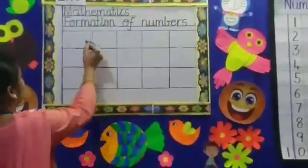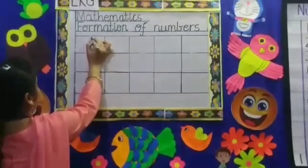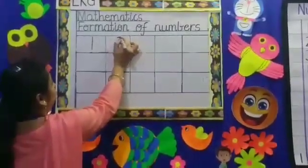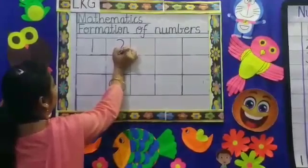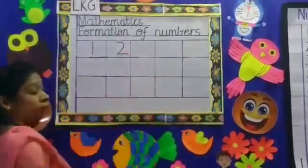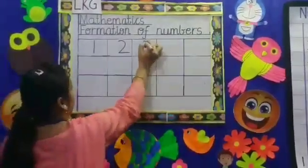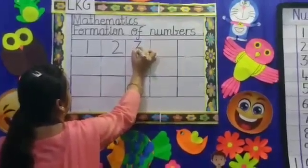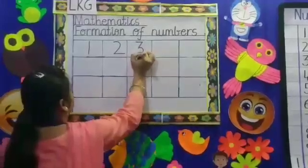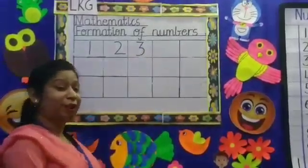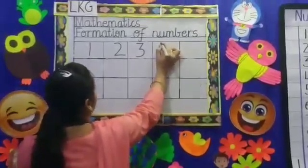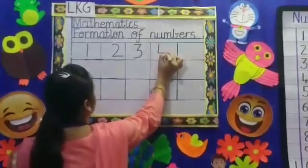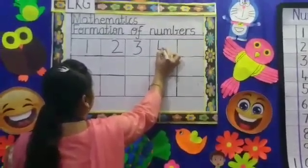When you write number 1, you make a standing line — and that is your 1. Number 2: you start from the top, come right down, and a sleeping line — that's your 2. Number 3: you make a sleeping line, a slanting line, and half around — that's your number 3.